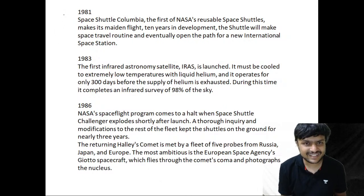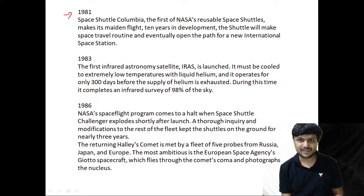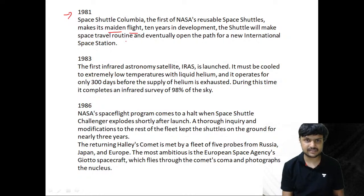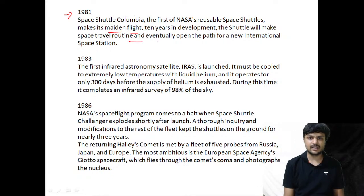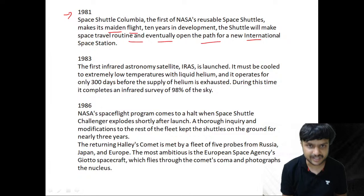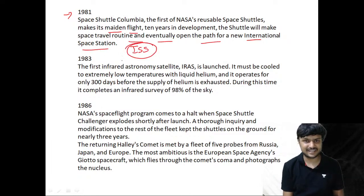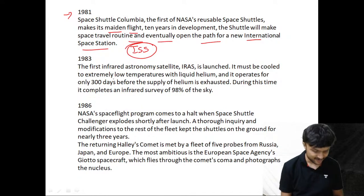In 1981, Space Shuttle Columbia — NASA's first reusable space shuttle — makes its maiden flight. Ten years in development, the shuttle program was meant to make space travel routine and eventually open the path for the new International Space Station.